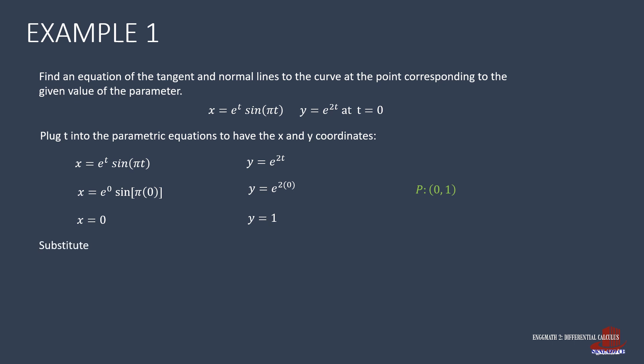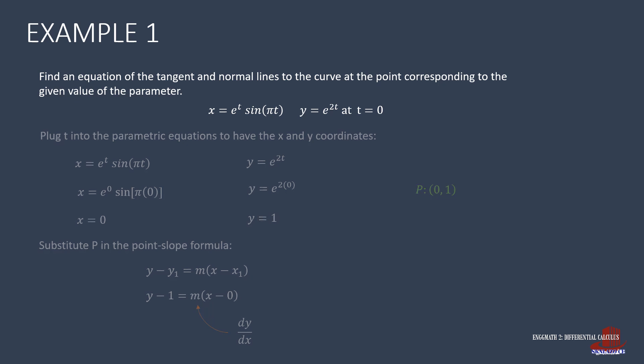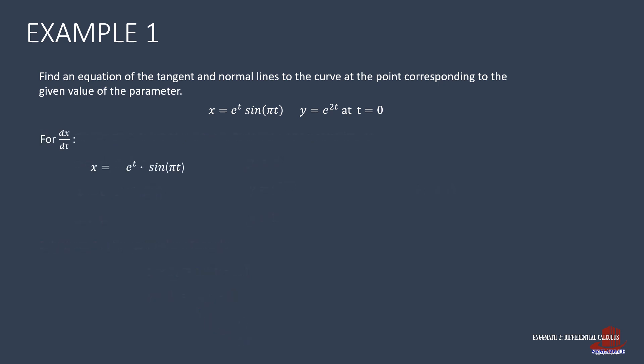We move on to the point-slope formula and plug in the coordinates of the point to have y − 1 = m(x − 0). The next term to look for is m, which is the derivative of y with respect to x, i.e., dy/dx.